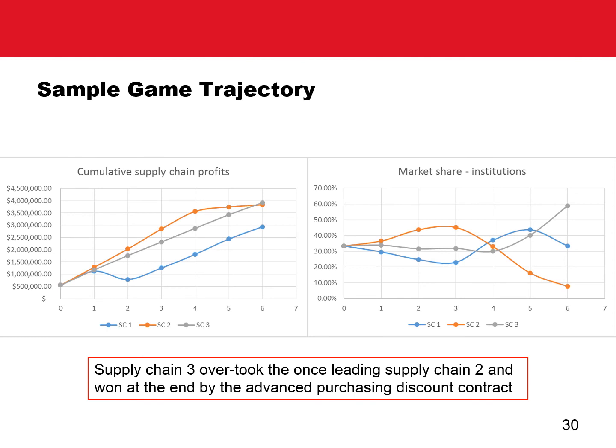Here is an example where one supply chain — supply chain 3 — initially lagged behind, overtook the leading supply chain 2, and won the game in the end by using the advanced purchasing discount contract. The results can be dramatic, and all kinds of events and actions such as cheating, deceiving, and backstabbing can happen. In general, the winning florist and the winning importer may not come from the same supply chain. However, better performers more likely come from better synchronized supply chains, while the worst performers often come from distrusted and heavily backstabbing supply chains.